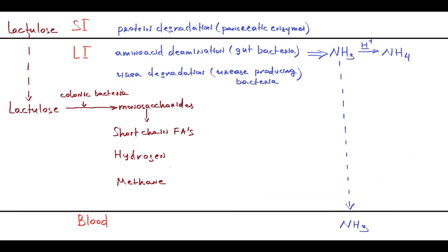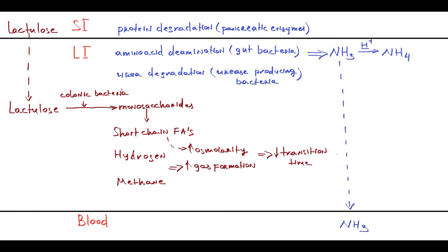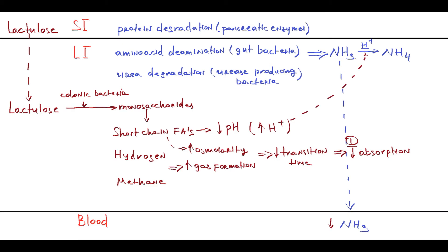Hydrogen and methane production causes increased intraluminal gas formation, and short-chain fatty acids increase intraluminal osmolarity. This results in a reduction of transit time through the intestine, reducing the time ammonia is present in the intestine, so ammonia absorption decreases and blood ammonia levels decrease. The first effect of lactulose is thus a decrease in ammonia absorption due to faster transit. The ionization of short-chain fatty acids leads to decreased intraluminal pH with increased hydrogen protons, which increases conversion of ammonia to ammonium, trapping more ammonium and reducing dangerous free ammonia — decreasing ammonia absorption and blood ammonia levels.